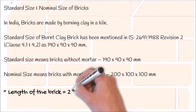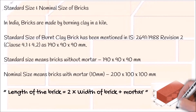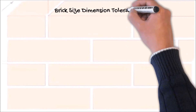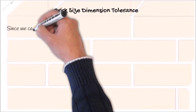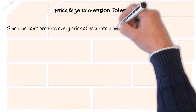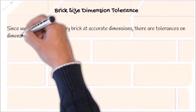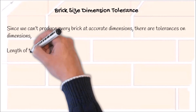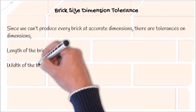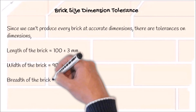The length of the brick equals 2x the width of the brick plus mortar. Brick size dimension tolerances: since we cannot produce every brick at accurate dimensions, there are tolerances. Length of the brick equals 190 plus or minus 3 mm. Width of the brick equals 90 plus or minus 2 mm. Breadth of the brick equals 90 plus or minus 2 mm.